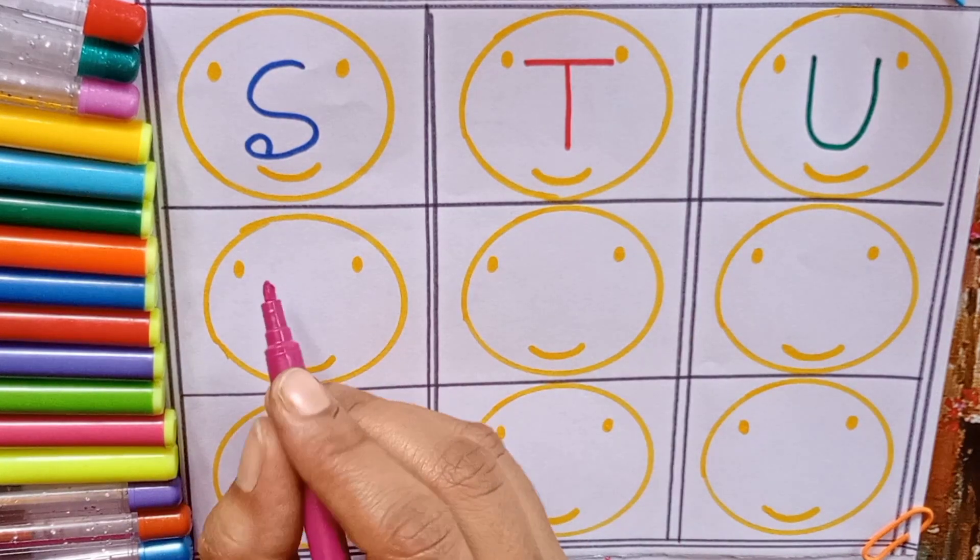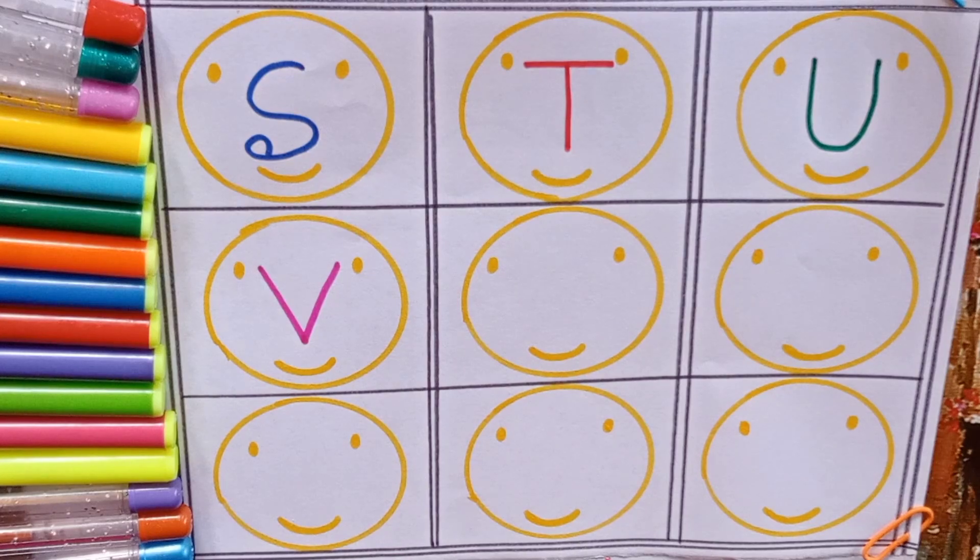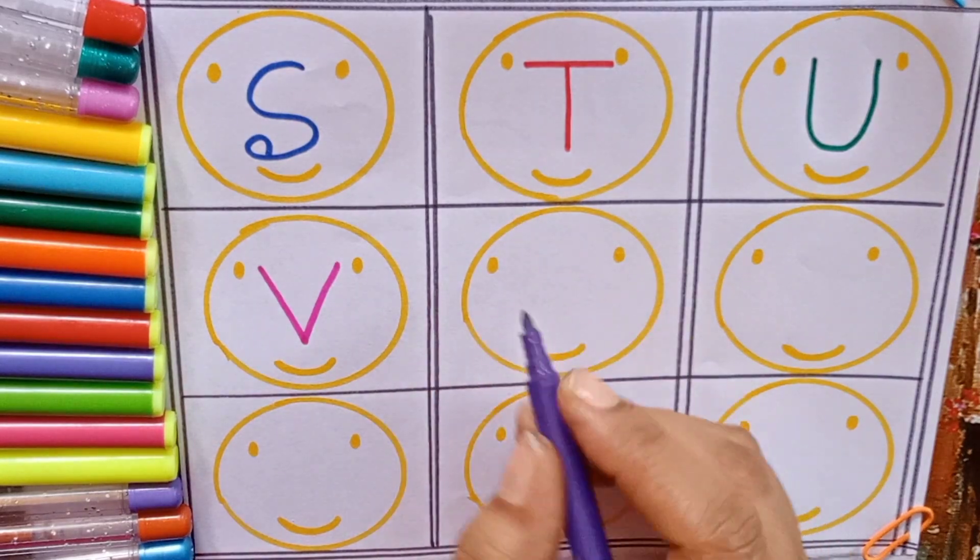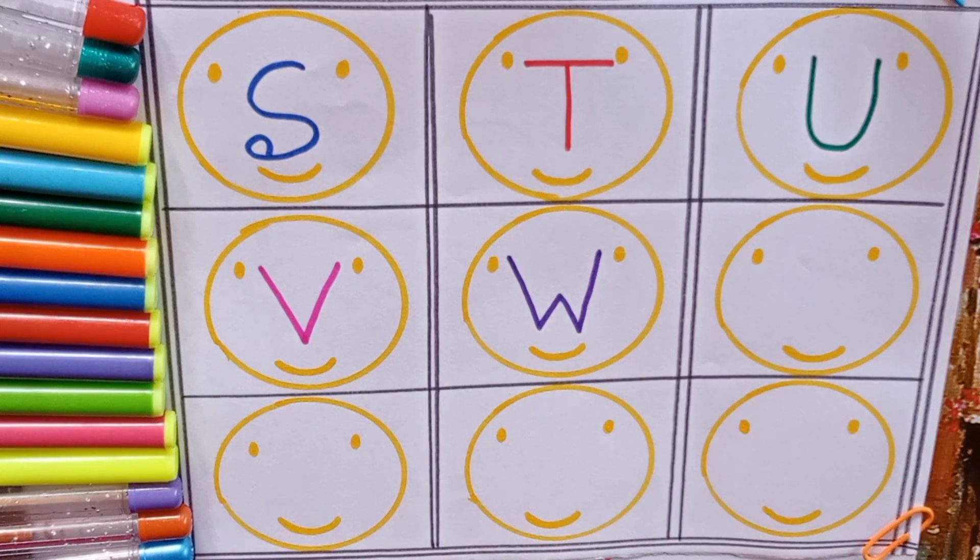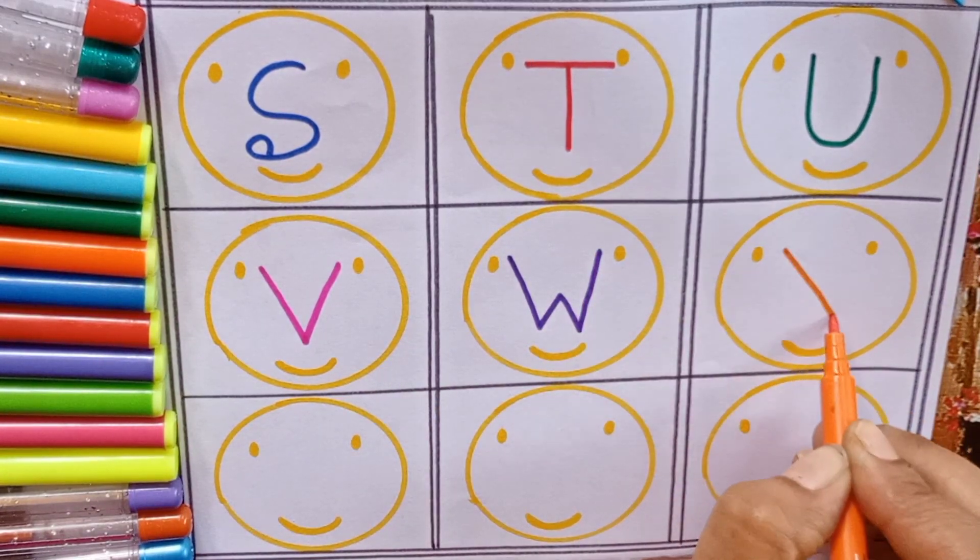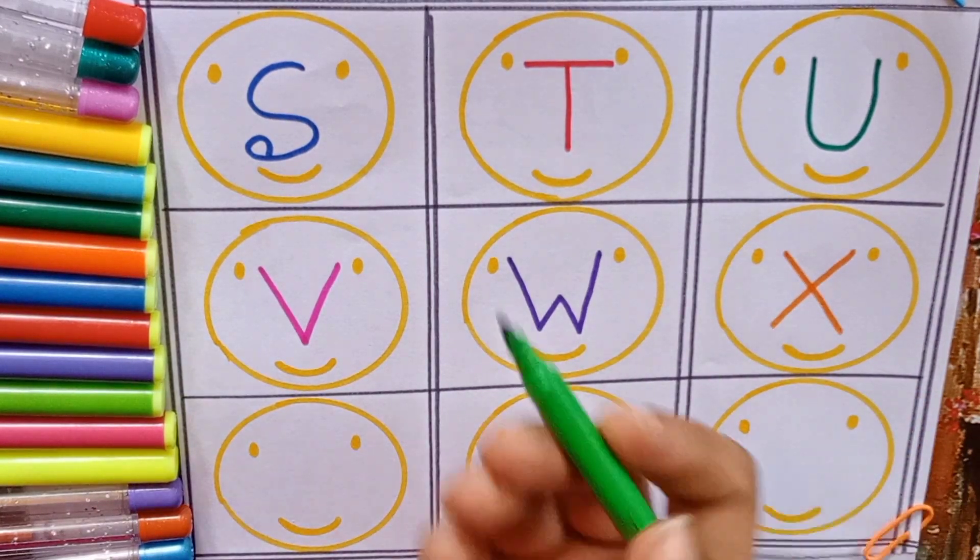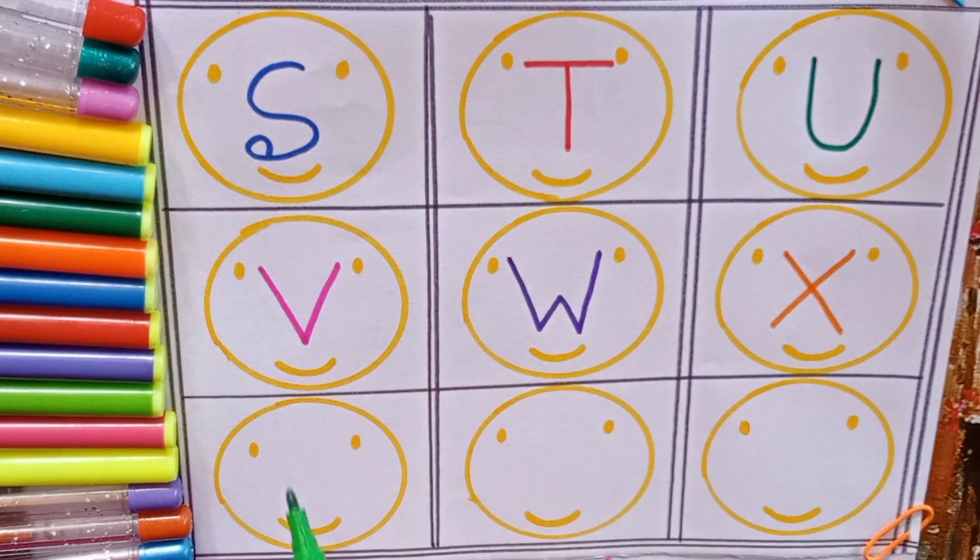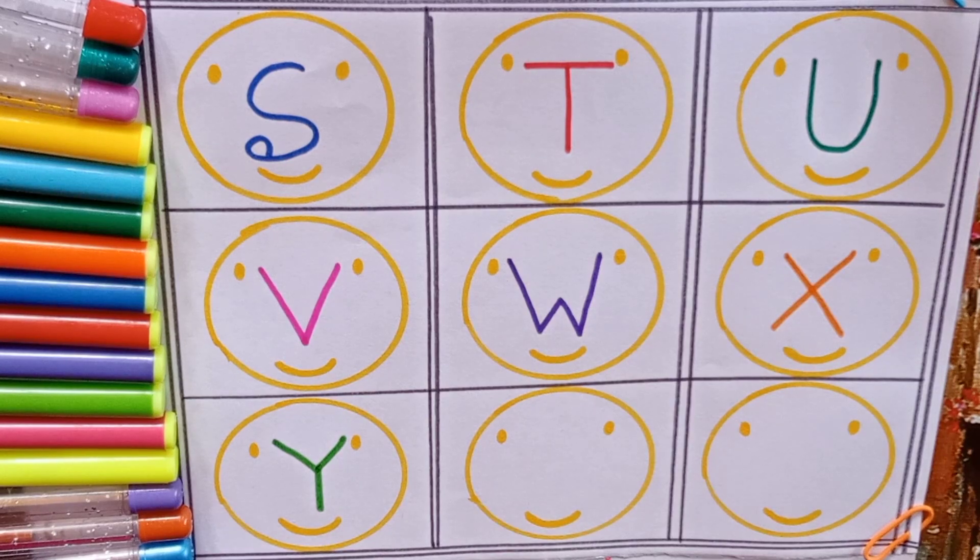Our next color is purple: W, W for water. Orange color: X, X for Christmas tree, X for also xenon. Light green color: Y, Y for yacht, Y for also York.